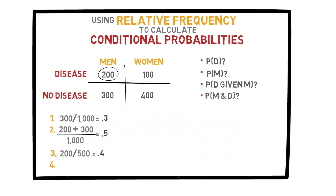Lastly, what is the probability of event M and D? We want to know the probability that the chosen person is a man and also has the disease. From 1000 people, our table shows us that 200 men have the disease. So our probability here is 200 divided by 1000, or 0.2.